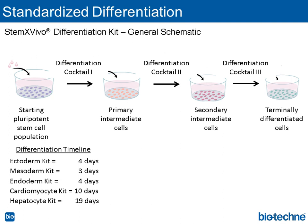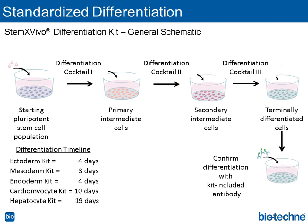This next slide gives you an idea of the general schematic of the differentiation kits. They're monolayer-based. The timeline for differentiation varies depending on the lineage of interest. The kits come with different differentiation cocktails to guide the stem cells through the different differentiation intermediate stages until you reach the terminally differentiated cells of interest. All kits also include an antibody to confirm the differentiation lineage.